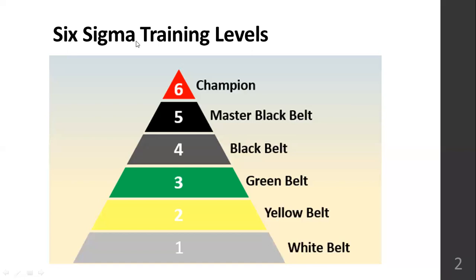The next level is Yellow Belt, where some exposure to Six Sigma concepts is provided, including basic knowledge of means, standard deviation, and range. Yellow belt practitioners can receive two-day training sessions — essentially a crash course in Six Sigma. They usually support projects of limited scope and assist higher-belt managers, carrying out tasks as directed by a green belt manager.